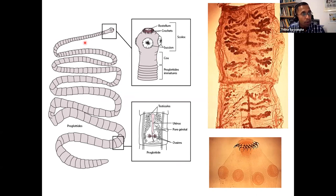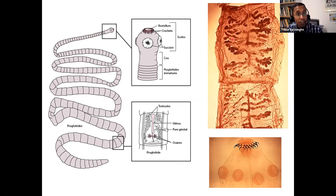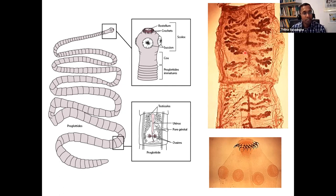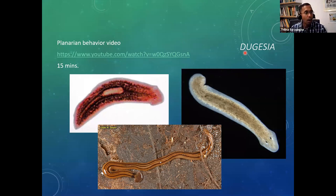Some proglottids are smaller and some are larger. In a larger, mature proglottid, the entire space is taken up by the reproductive system. In the most mature proglottids, all you see is fertilized eggs — tiny tiny dots filling the entire structure. This makes them extremely well adapted to parasitic life. There is a video link here, though I'm not going to play it right now.